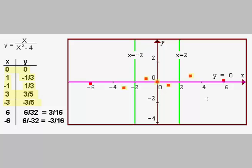And then just maybe one more point on each side. If we plug in x equals 6, we get 6 over 36 minus 4, or 6 over 32, which simplifies to 3 sixteenths. And when x is negative 6, we get y equals negative 3 sixteenths.